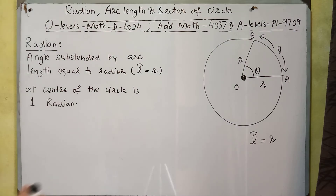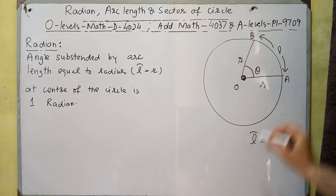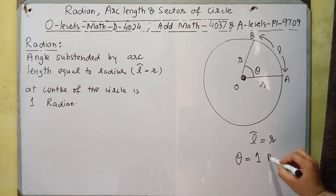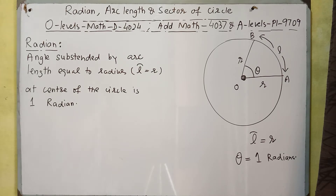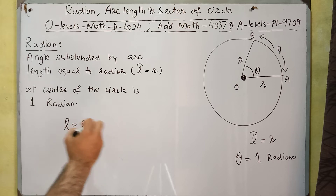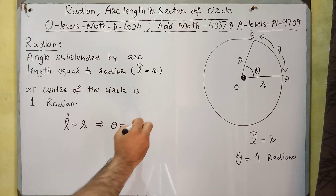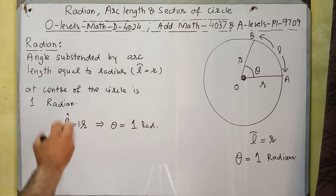When an arc length equal to the radius subtends an angle at the center of the circle, that angle is called 1 radian. In this diagram, the arc length is approximately equal to the radius, so the angle subtended is approximately 1 radian. We can find the value of 1 radian and make a connection between radians and degrees. If arc length equals r, then the angle will be 1 radian.